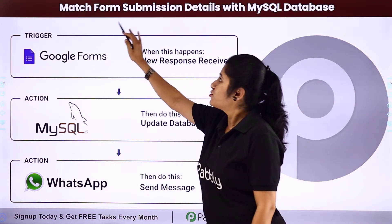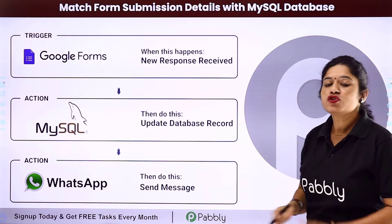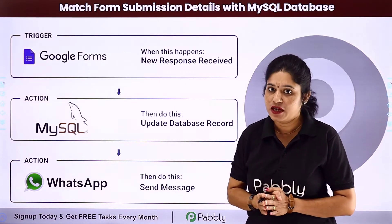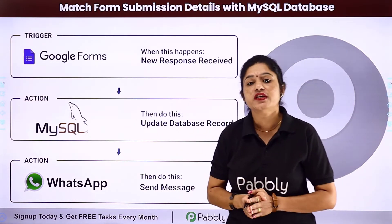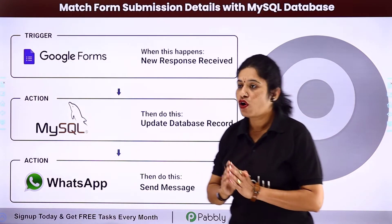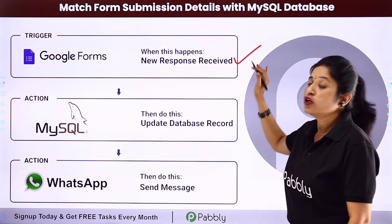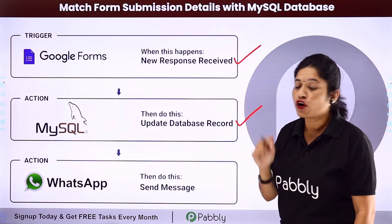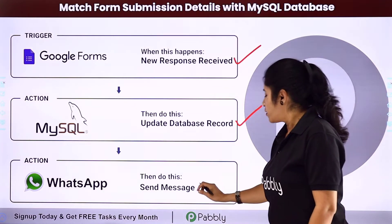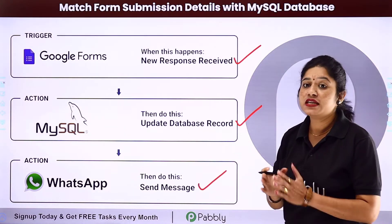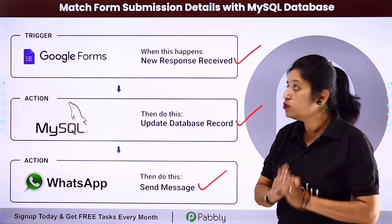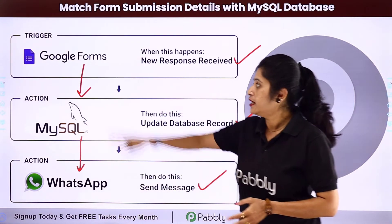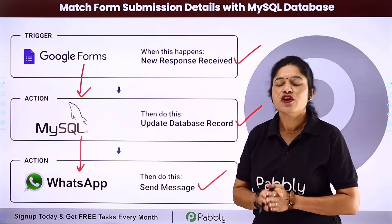In this video, we are going to learn how you can match form submission details with a MySQL database. You have candidate details in your MySQL database table, and to update them, you've created a contact updation form using Google Forms and shared it with all candidates. Whenever the form is filled, the submission details should be matched with your database records, and if any specific record doesn't match, it should be updated. Then your candidate should receive a WhatsApp message on their mobile number stating that their records are updated. For that, you need to integrate Google Forms with MySQL database and then with WhatsApp using Pabbly Connect.